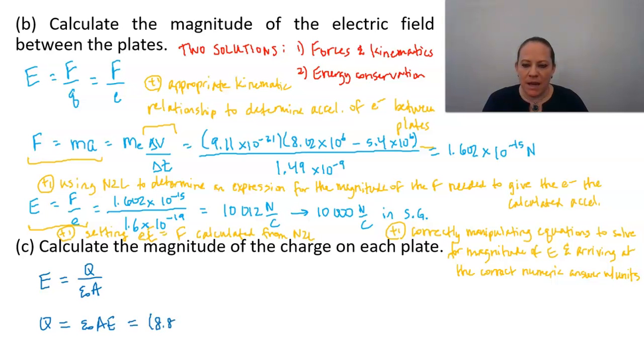So we will plug in our values. Epsilon naught is a constant of 8.85 times 10 to the minus 12. Now, our area of the plates was 0.25 square meters, and using the 10,012 newtons per coulomb that I just found, I get a charge of 2.2 times 10 to the negative 8 coulombs. And if you use the round 10,000 newtons per coulomb, you get the same thing, 2.2 with some other decimal places that were small enough to round to just 2.2.